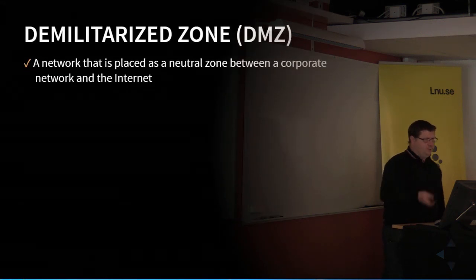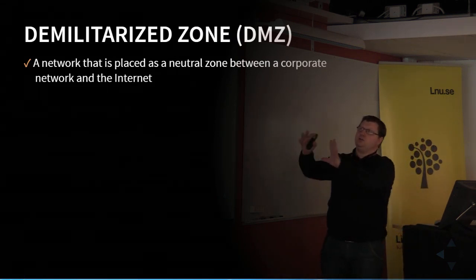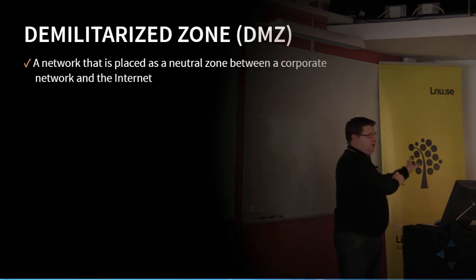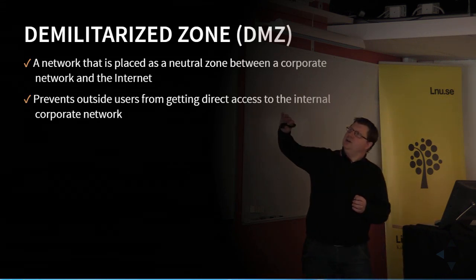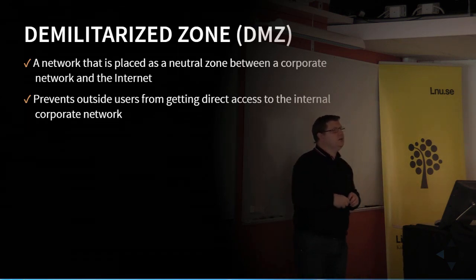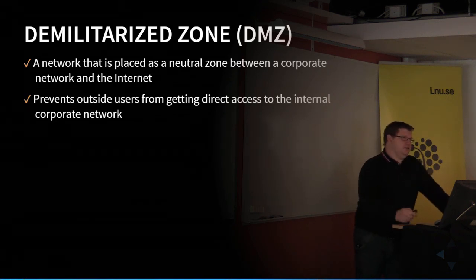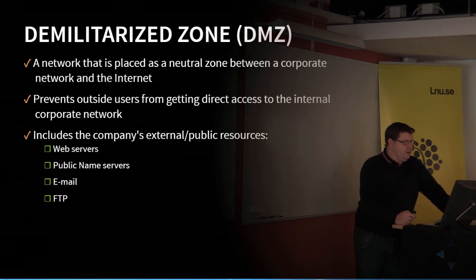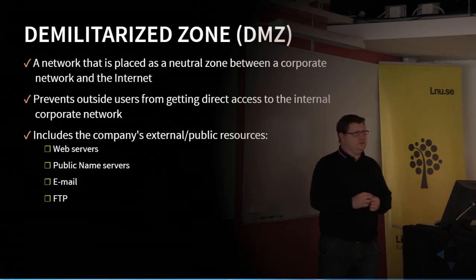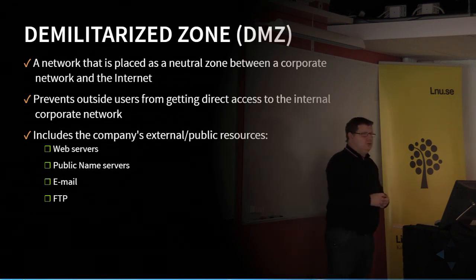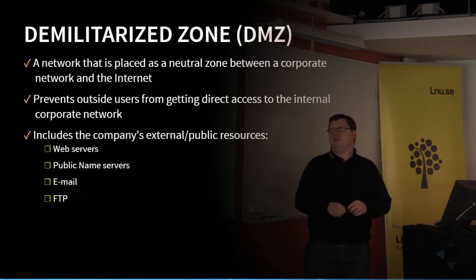The DMZ is a network placed in a neutral zone between the corporate internal network and the internet. We do this so that if one server is penetrated by an attacker, they won't be able to access the internal network. What should we put in this network? It should be stuff that is publicly accessed — web servers, publicly accessible DNS servers, FTP servers, stuff that you want to be accessible from outside your network.